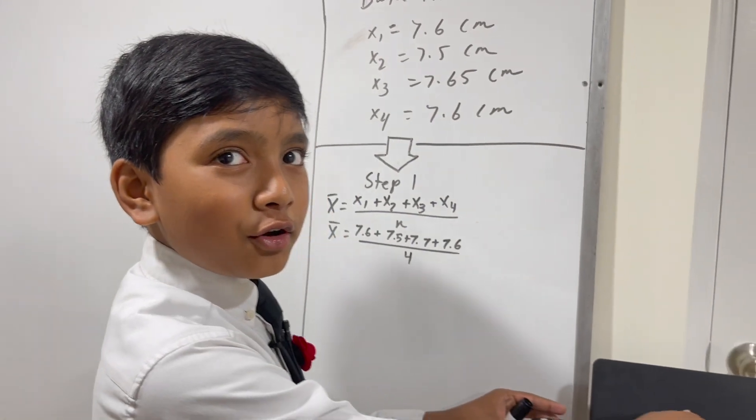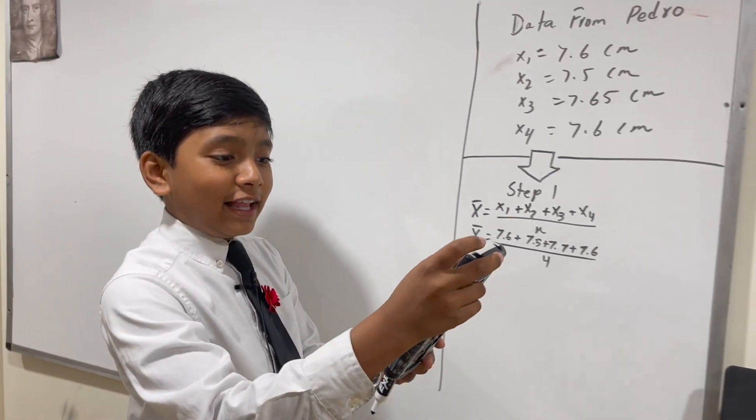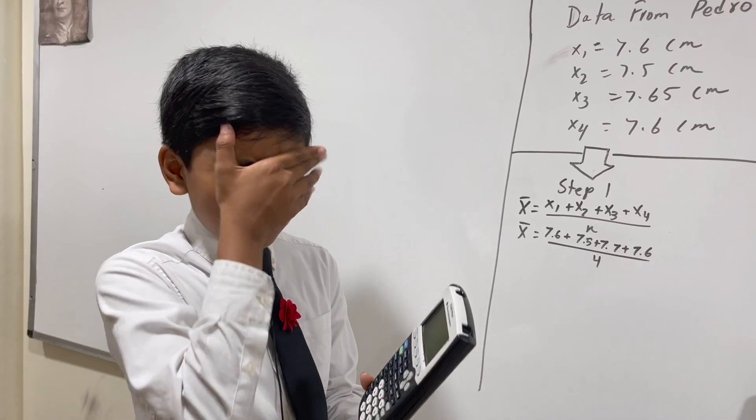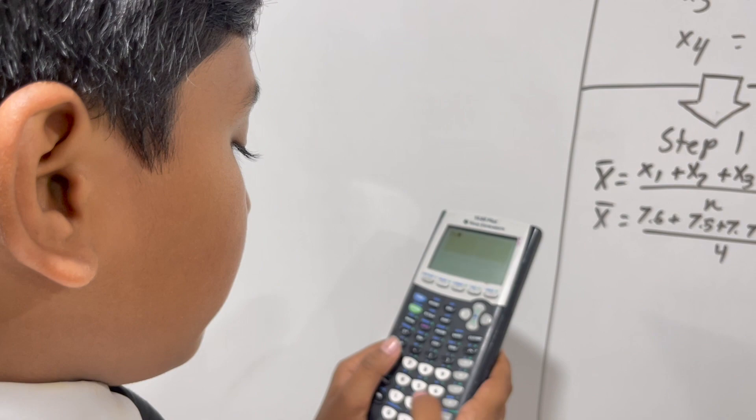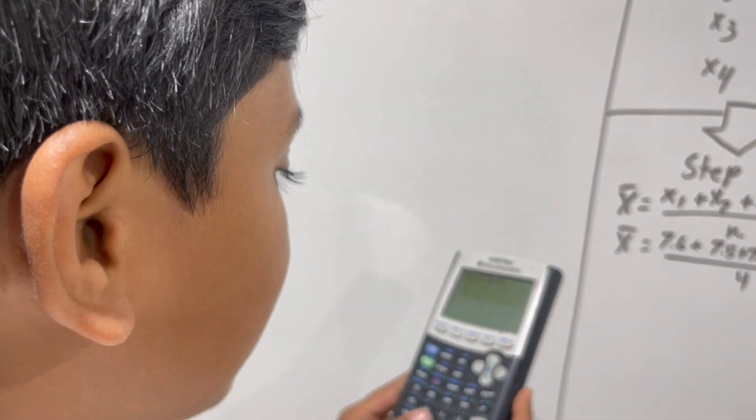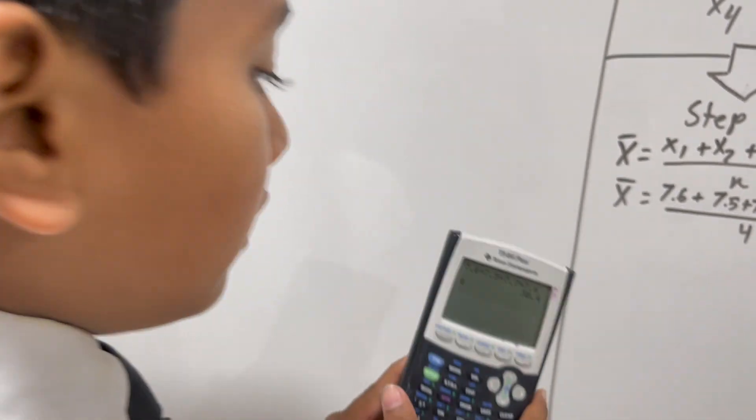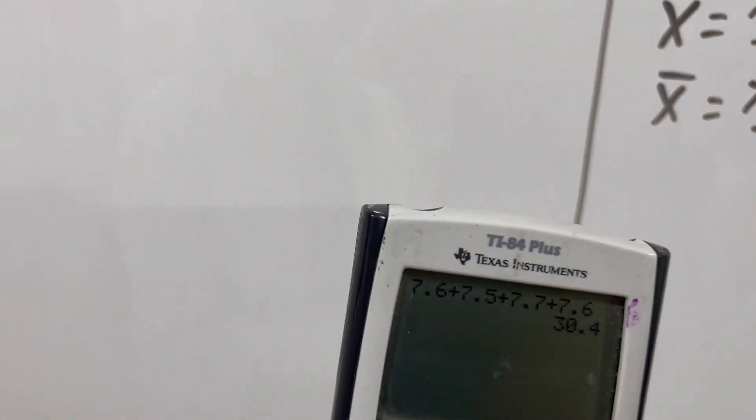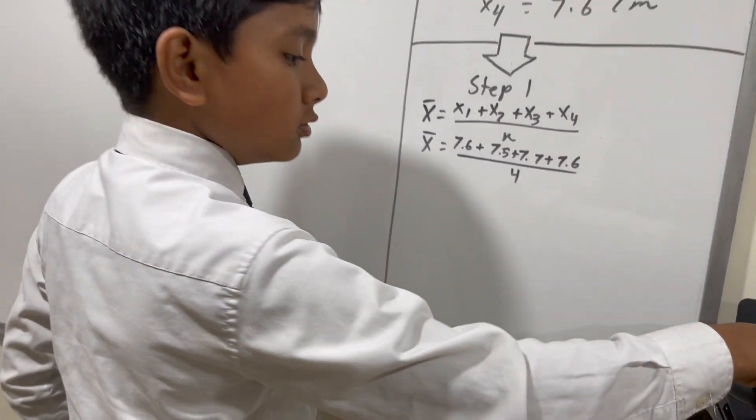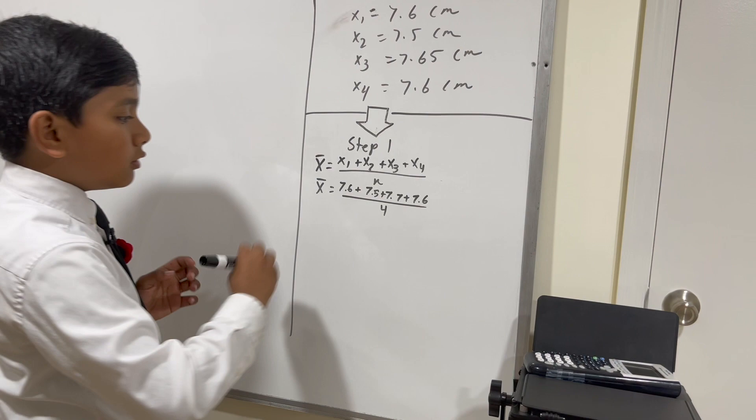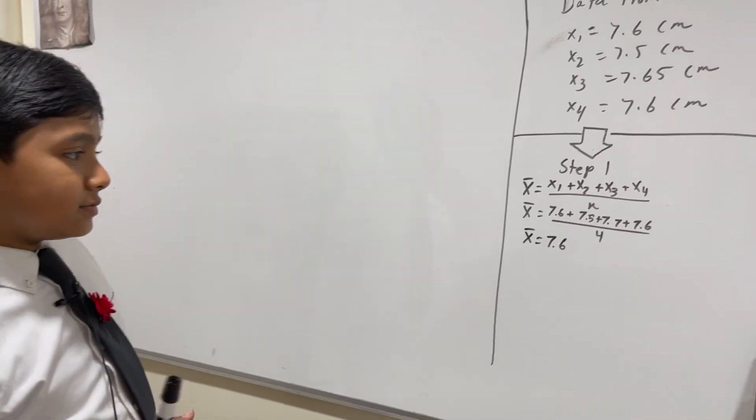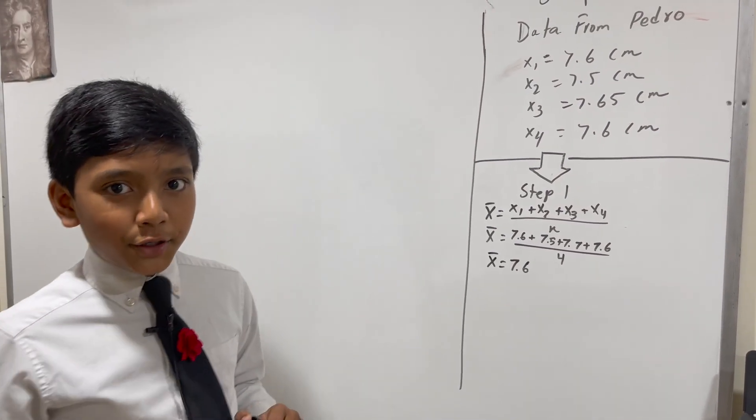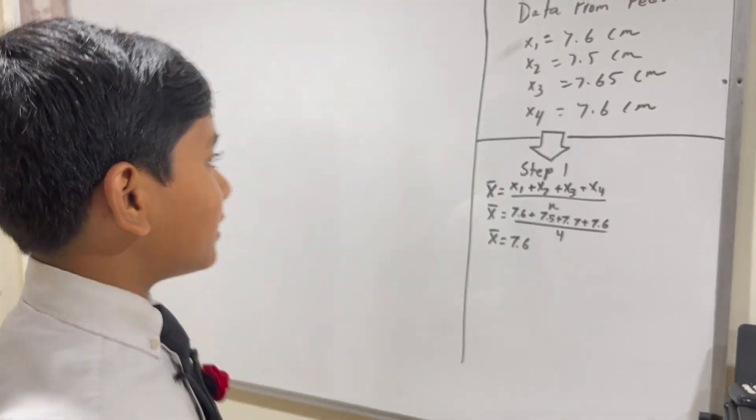All right, so now we're going to use the secret calculator with half of its screen broken. So this is gonna be equal to 7.6 plus 7.5 plus 7.7 plus 7.6, which is equivalent to 30.4. Dividing that by four gives you 7.6. So that means x-bar equals 7.6. However, we're not done yet buddy, because now we're gonna have to move on to step number two.